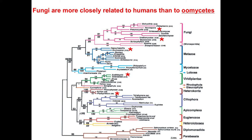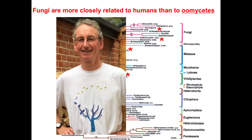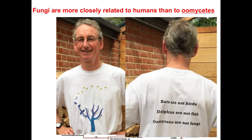We feel so strongly about it in the plant pathology field that we've got t-shirts made with a phylogenetic tree. On the back: bats are not birds, dolphins are not fish, oomycetes are not fungi. The fact that we've gone to the scale of making t-shirts tells you how strongly we feel about this important issue.